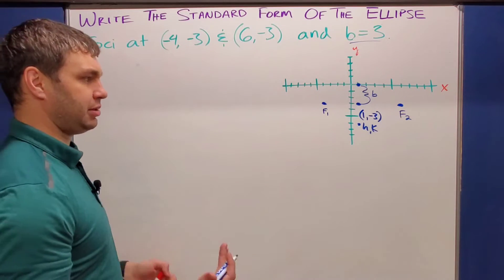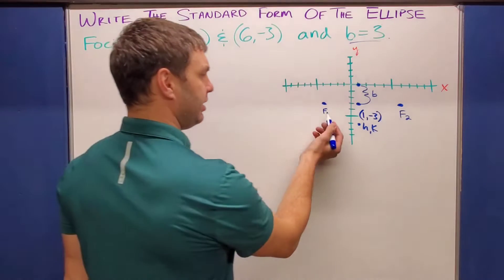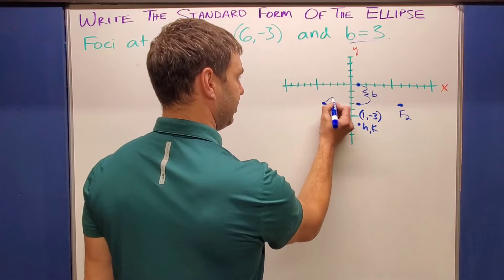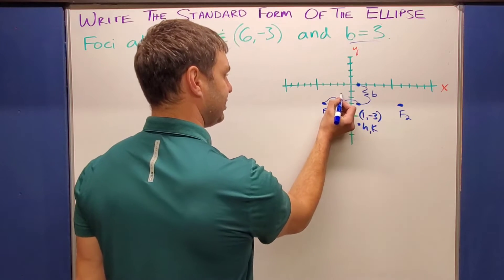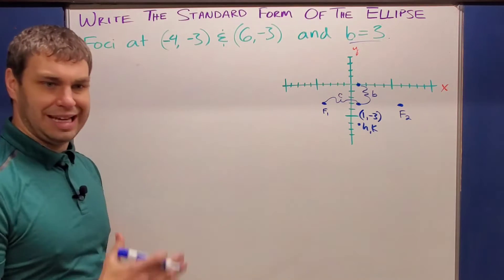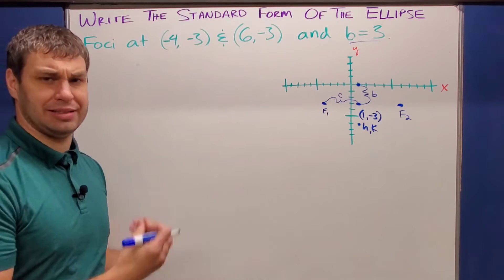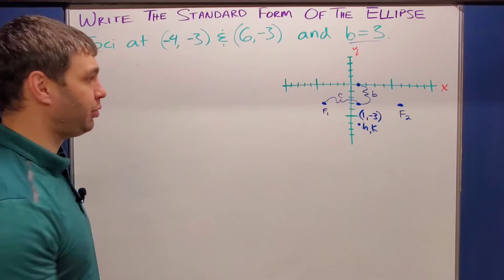Okay. So why does this help us? Well, it does because this foci value in between here and here, that is our C. And remember we need A and B, not B's and C's in order to write this in standard form.